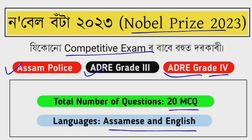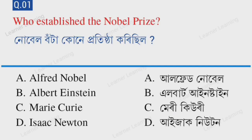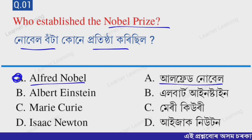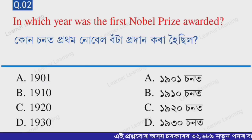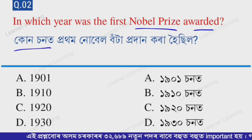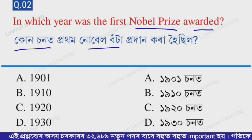The first question: Who established the Nobel Prize? The correct option is option A — Alfred Nobel. Alfred Nobel established the Nobel Prize.